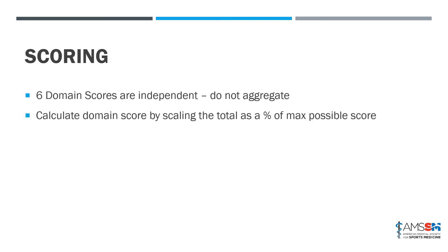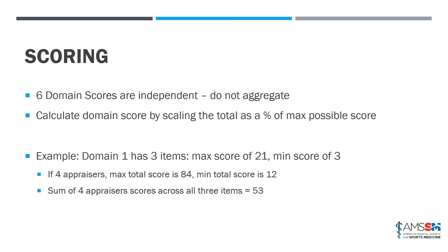Now let's get into the scoring. There are six domains, which we just reviewed. Each domain is independent — you do not aggregate the domains together, and you will not get a single final score for the AGREE2 instrument. Instead, you'll end up with six scores for the six domains, plus your two overall assessment responses. You calculate each domain score by scaling the total as a percentage of the maximum possible score. Going back to domain one with three items: each item scores one to seven, so the maximum combined score is 21 and the minimum is three — not zero.